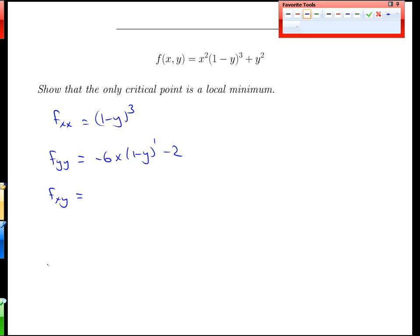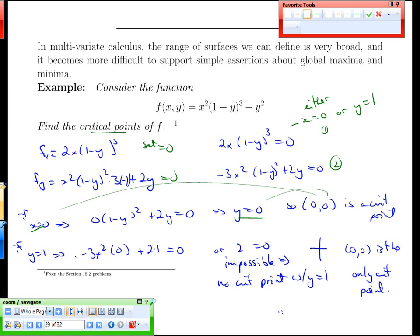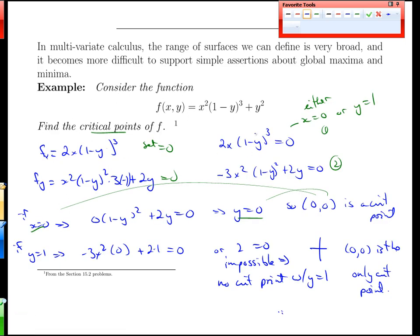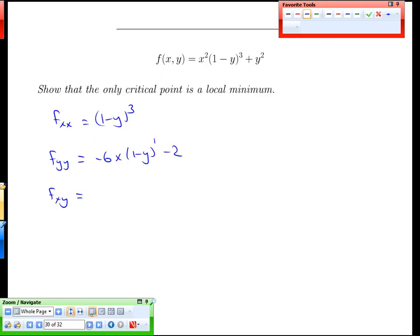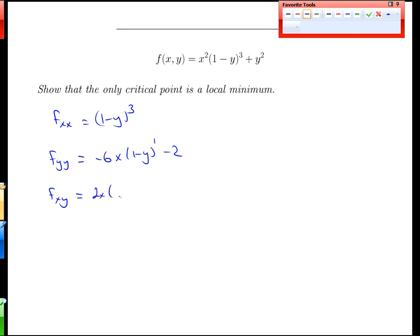And the mixed derivative, let's take the y derivative of this expression. We're going to get another negative sign for that. We're going to have the y derivative of this. We'll bring the 3 down front, get (1-y)². So 2x times 3 times (1-y)² times negative 1. And this one also has a negative 1 in it. So those are our derivatives. Let's tidy those up a little bit.